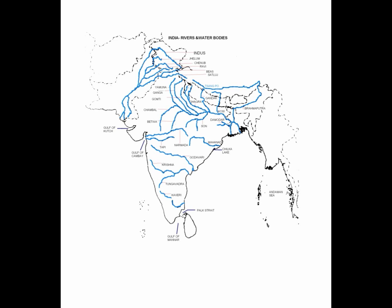There are also other features on this map including gulfs, seas, and one lake. Very close to river Mahanadi you'll see a darker spot — that is Chilka Lake. Coming to the southern part, there is a small dotted line between India and Sri Lanka. Above that dotted line, on the north side, is Palk Strait, and to the south of that dotted line is Gulf of Mannar.